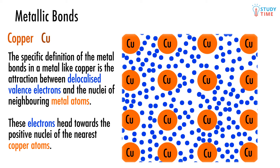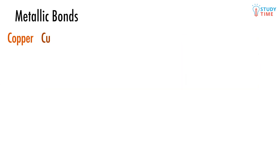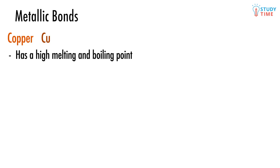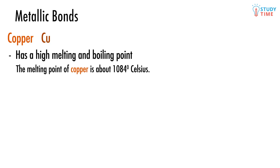Let's take a look at the features of metals and metallic bonds. Copper has a high melting and boiling point. Have you ever seen a molten metal? It would have only been in an industrial situation, because only in special factories can we get close to breaking these powerful metallic bonds. The melting point of copper is about 1084 degrees Celsius. The exceptions to this are mercury and gallium, which are metal solids or liquids with unusually low melting and boiling points.